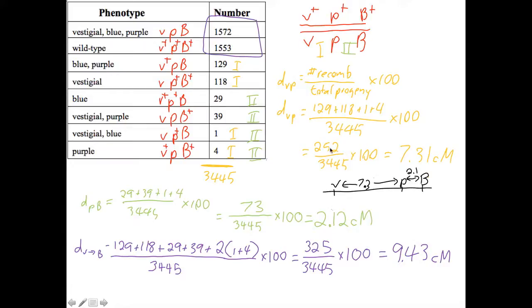So when we draw our map, we can put them proportionally spaced just like this. We should check the numbers we've got. If we add up these numbers in our map, 7.3 plus 2.1, we're going to get 9.4. And that's in good agreement with what we have right here. So we can put that in as our completed map.